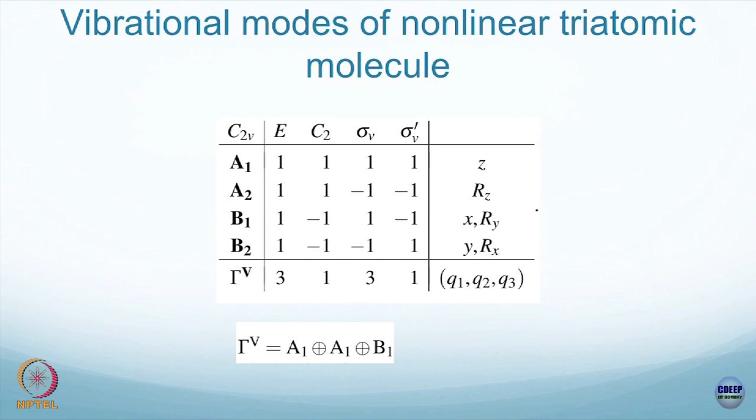Do that exercise, break that gamma V. A1 appears twice, and you have B1 which appears once. So totally, rank 3 is broken up into 3 rank 1 irreducible representations. This is the first step.